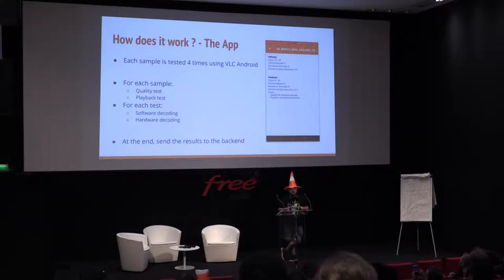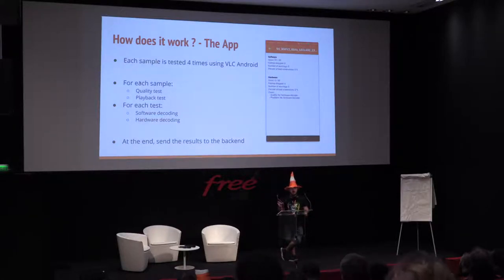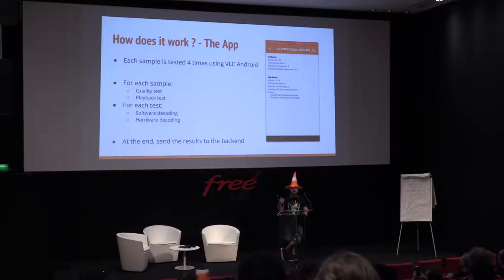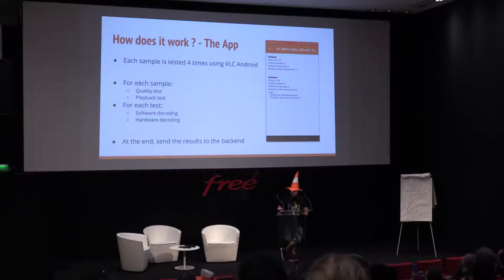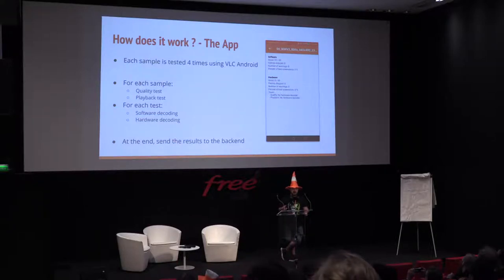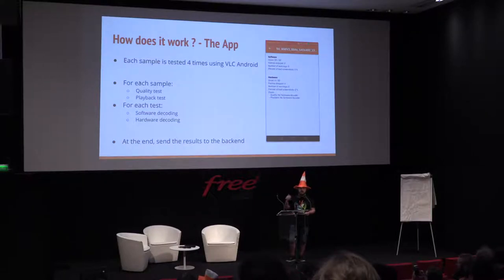Quality tests are screenshots that are taken to compare. We have a phase of configuration where we take screenshots of the samples and compute a signature of that image. Then during the tests on the Android app, we perform the same thing and try to determine a percentage of distance, and according to a certain threshold, we validate it based on how the screenshots compare.